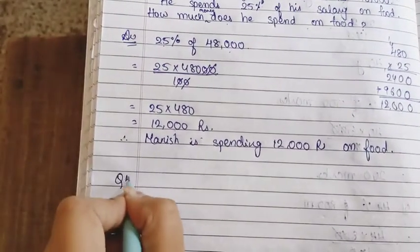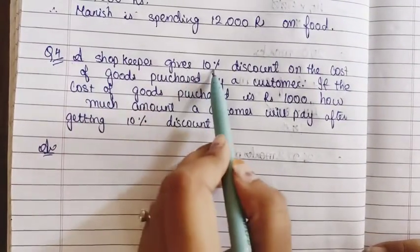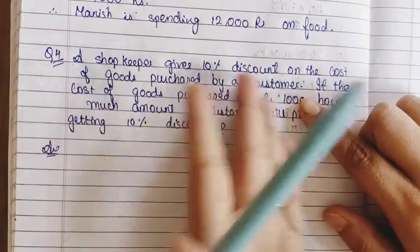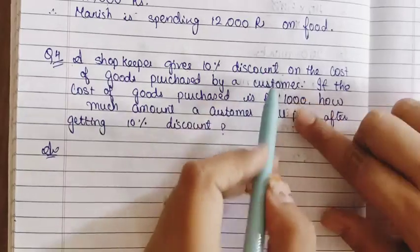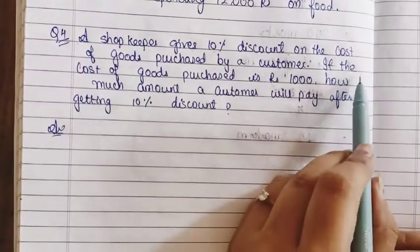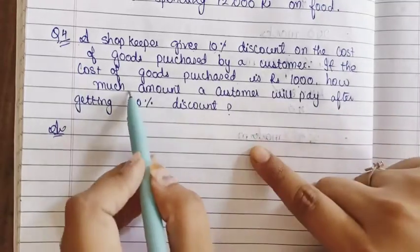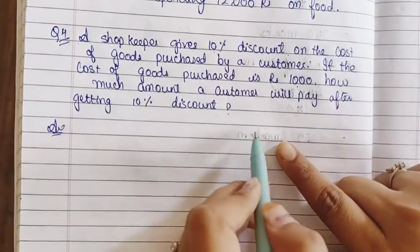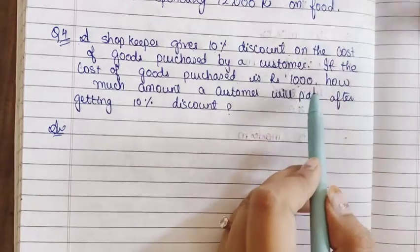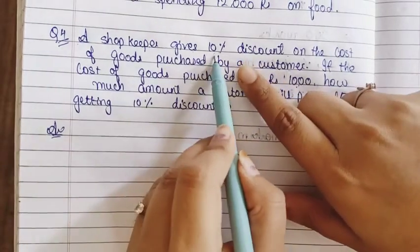Now we will go to question number 4. A shopkeeper gives 10 percent discount on the cost of goods purchased by a customer — like when you go to the mall and there is a 10 percent discount. Now if the cost of goods purchased is rupees 1,000, you have done 1,000 rupees shopping.